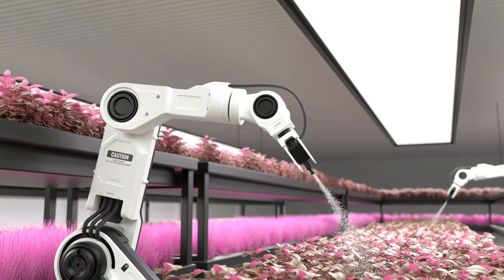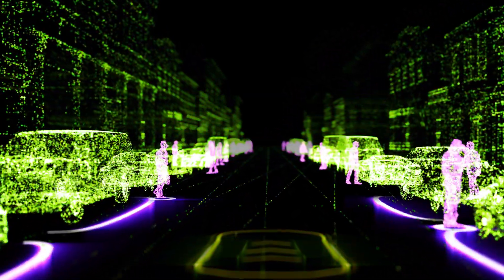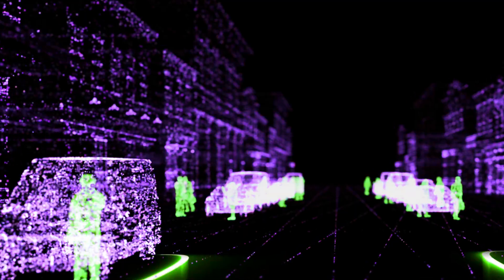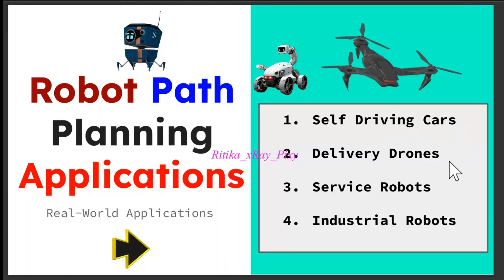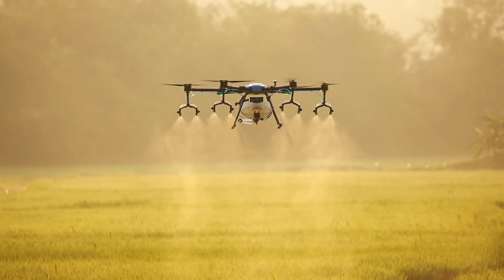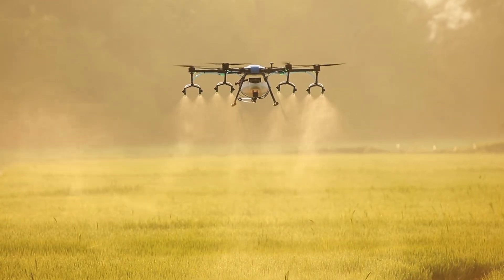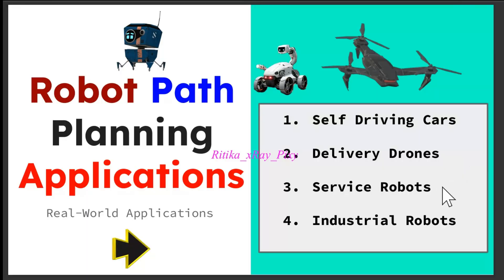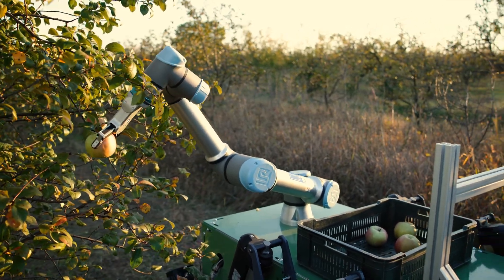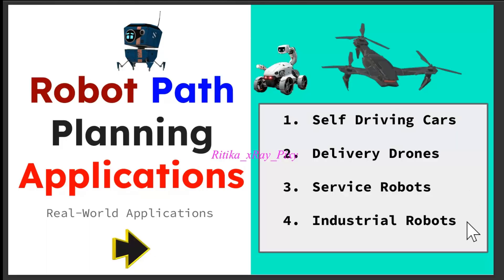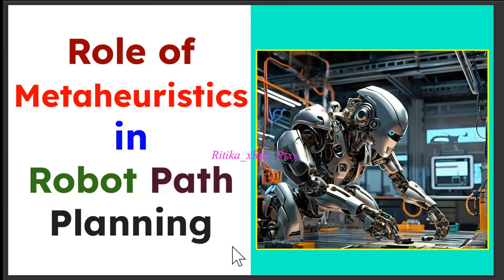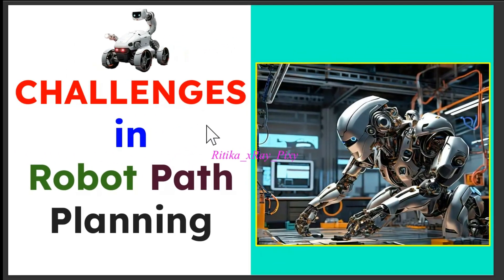Path planning is widely used in different fields of robotics. Self-driving cars depend on efficient path planning to navigate in traffic and avoid collisions to safely reach their destination. Drones use path planning to fly safely in 3D space, avoiding buildings, trees, and other obstacles during delivery or surveillance missions. Service robots in healthcare or customer service interact with people, deliver items, or perform tasks. Industrial robots are widely used in manufacturing plants and warehouses.